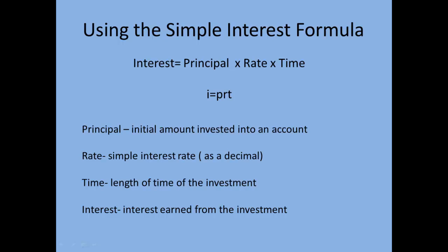Looking over this, let's make sure we understand what each part represents. P stands for the principal, and that's the initial amount invested into the account — so that's your initial investment. R stands for the rate, and that's the simple interest rate. It's very important that you use this as a decimal. If you don't use this as a decimal, your answer will be 100 times too big.